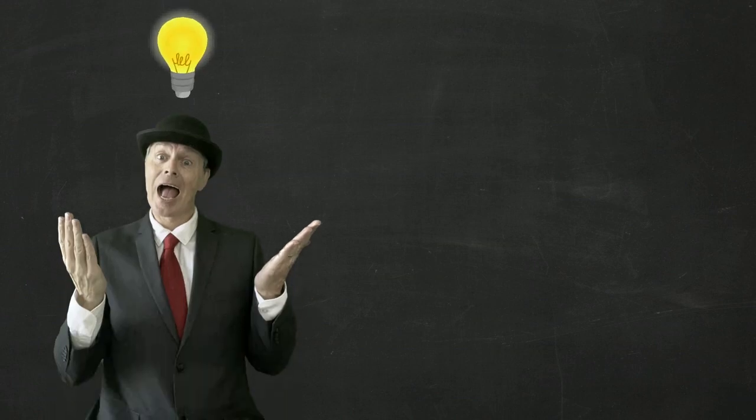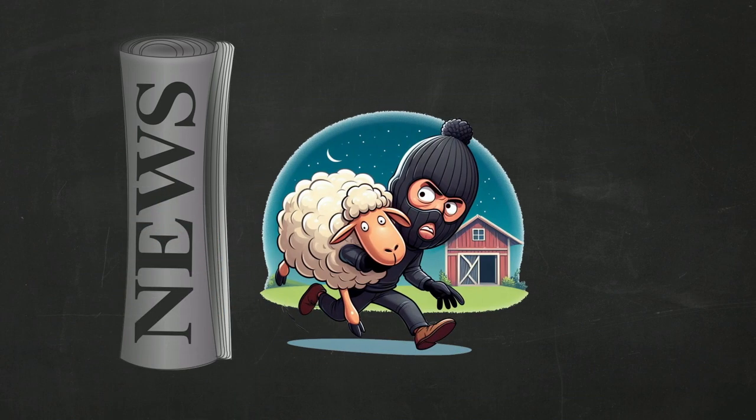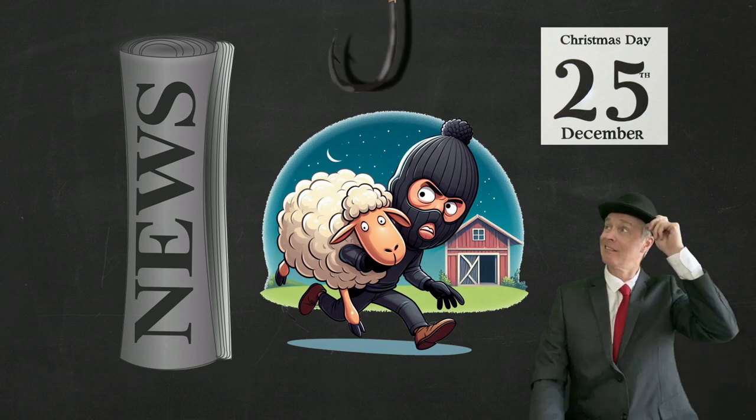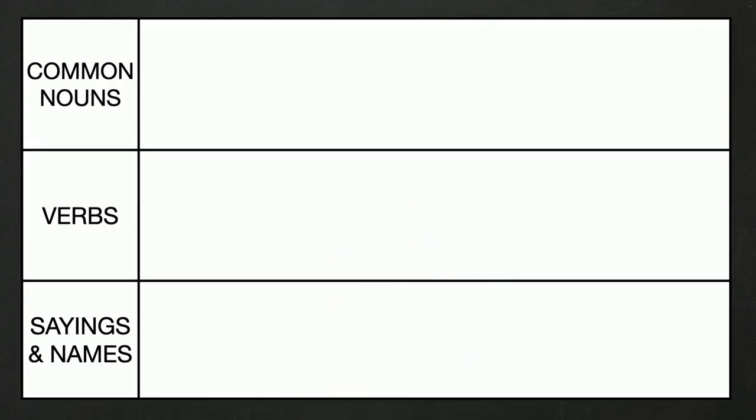Sometimes a pun will jump straight into our heads, but at other times thinking of them can be a bit of a challenge. So what can we do if this happens? Well, imagine that we've written a news report about a farmer's prized sheep that has been stolen on Christmas Day, and we need to come up with an engaging headline that hooks our readers. We're going to kick things off by creating a collection of words and phrases that are connected to our story.